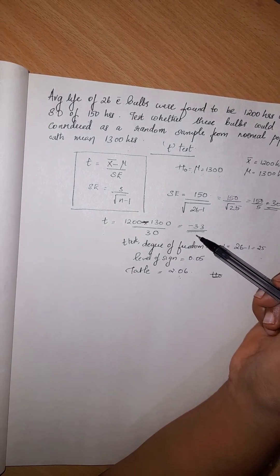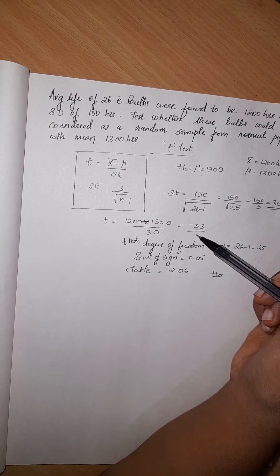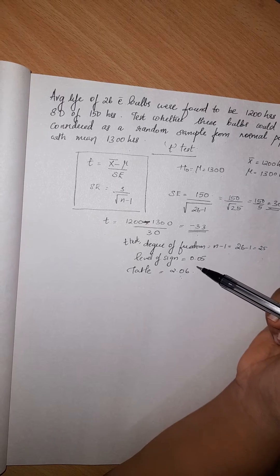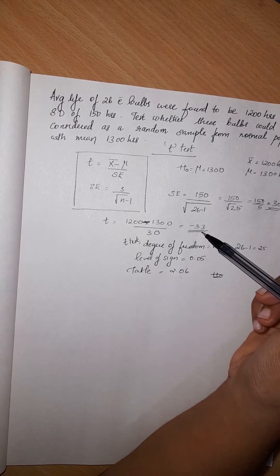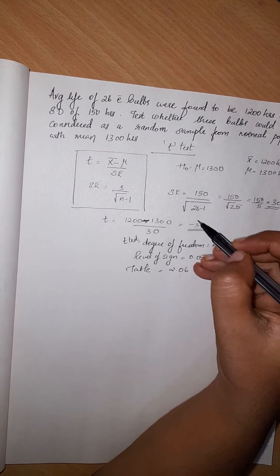Now, the calculated value is greater than the table value. 3.3 is greater than 2.06.